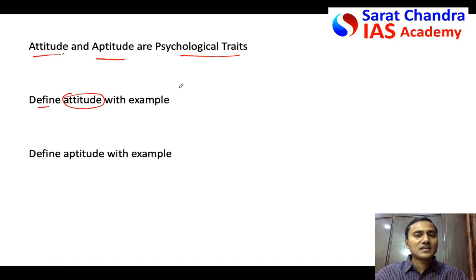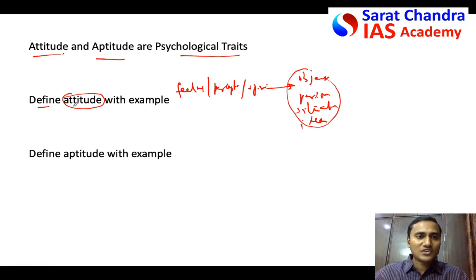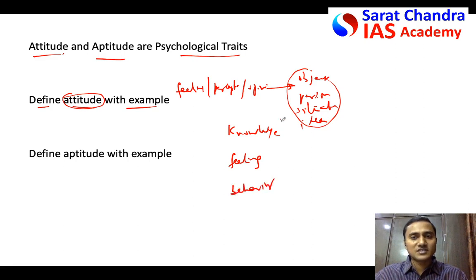First, define attitude. You can say that attitude is our feeling, perception, or opinion towards any object, person, situation, or even any idea. How you feel about an object, a person, a situation, or an idea is called attitude. Our knowledge towards something will decide our feeling towards it, and our feeling towards something will decide our behavior towards it. You can even draw a diagram or chart to explain this.